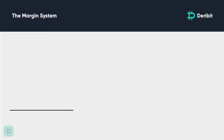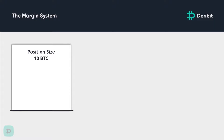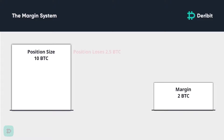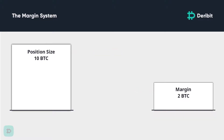Deribit is an exchange that offers leverage, so it is possible for traders to have positions considerably larger than their account balance. This leaves a chance the losing party in a particular trade cannot afford to pay the winning party if they run out of margin. This risk is initially mitigated by the margin system, whereby all traders with an open position are required to keep a certain amount of maintenance margin in their account to support their position, in case it moves against them. The precise level of margin depends on the instrument being traded and the size of the position, and updates in real-time as the markets move.